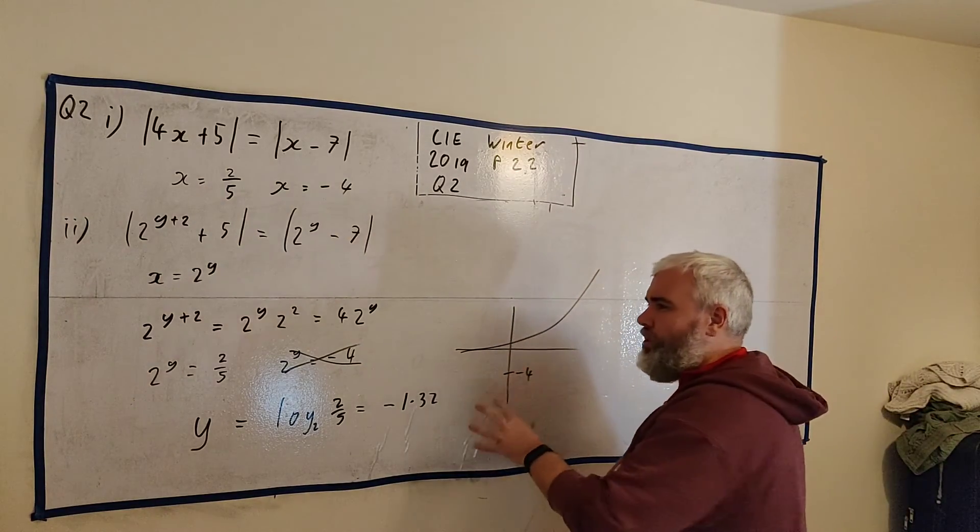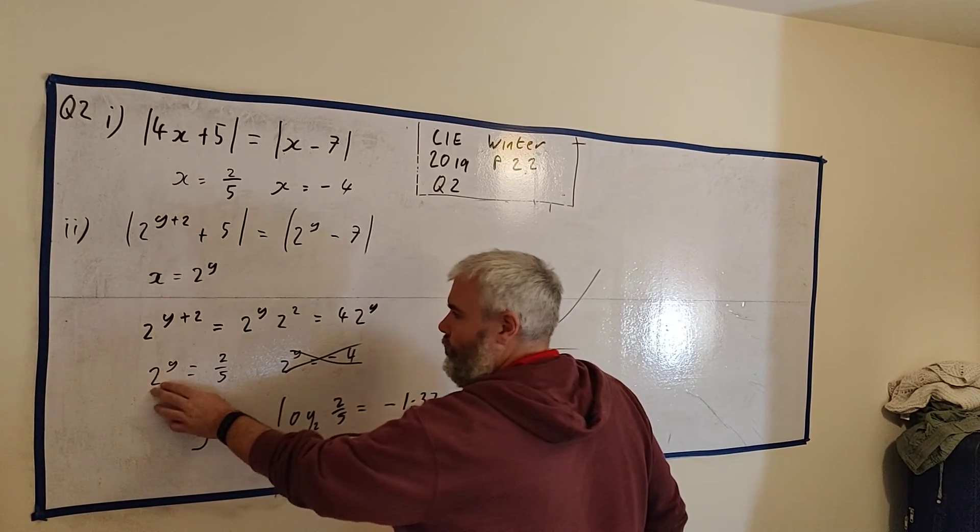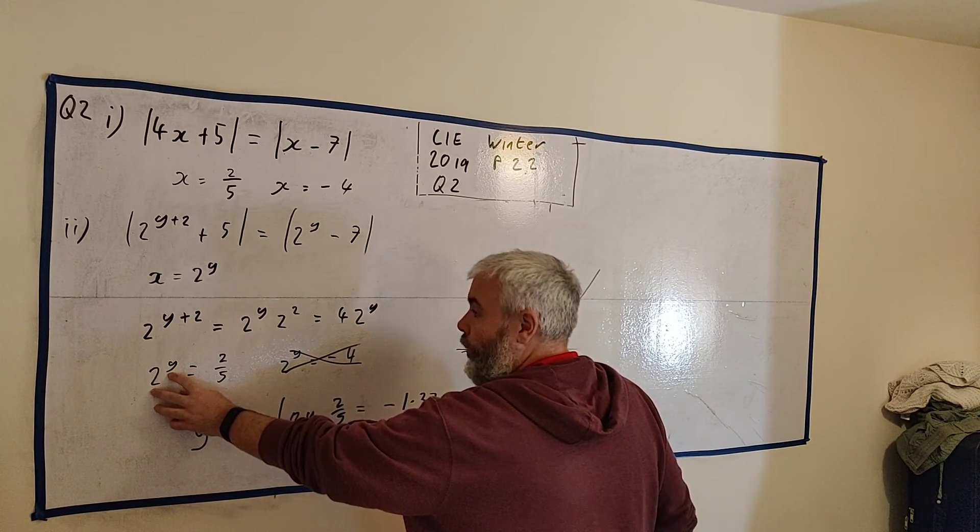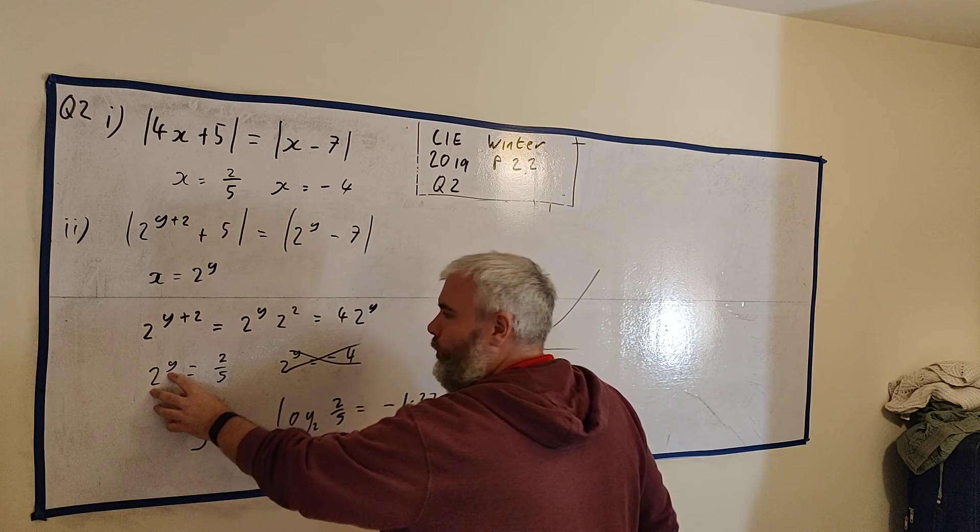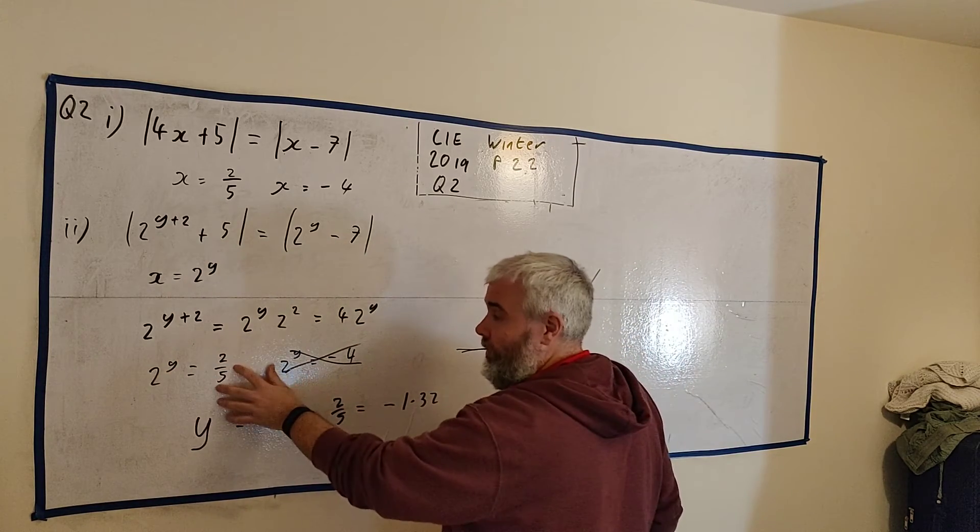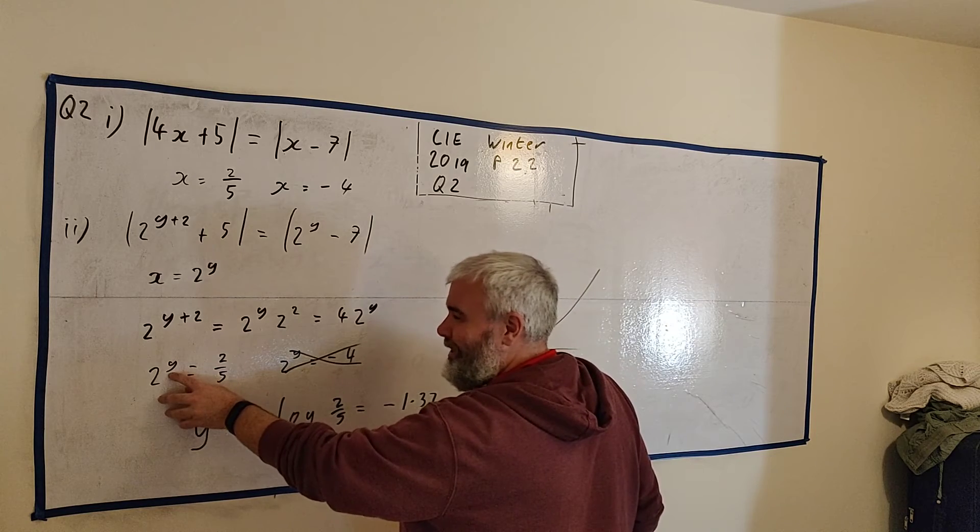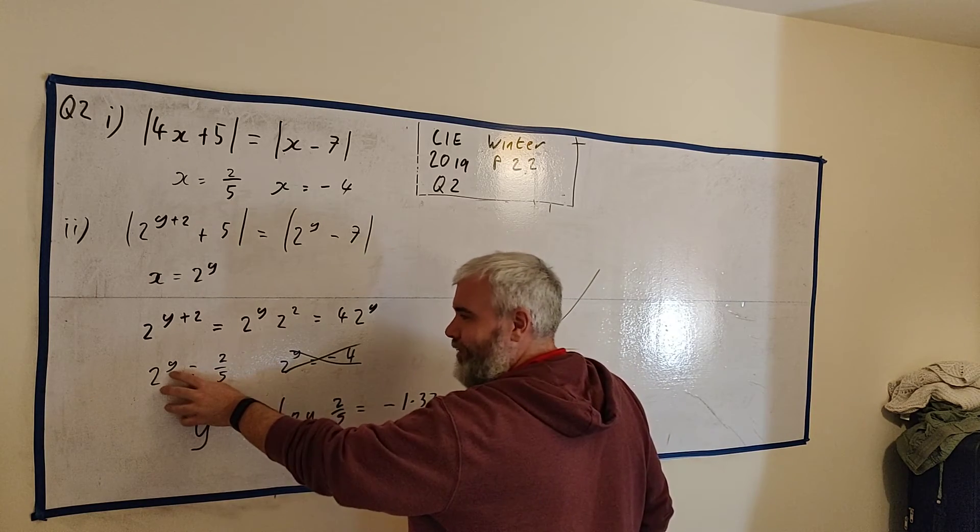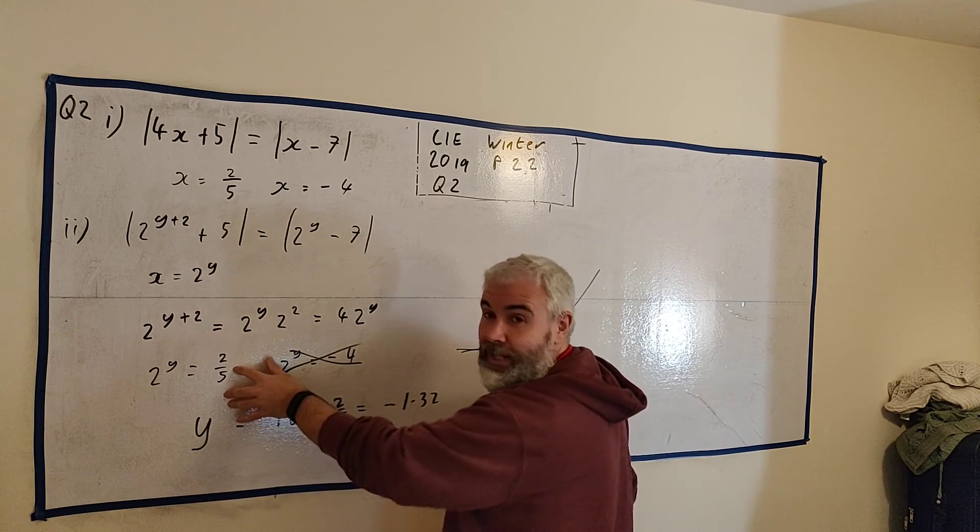And let's just double check this with a bit of common sense. 2 to the power of minus 1. Let's go through all the numbers. Like 2 to the power of 1 would be 2. This guy is less than 1. 2 to the power of 0 is 1. So this is definitely a minus number to get a number less than 1.